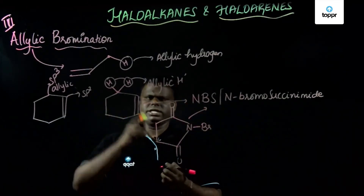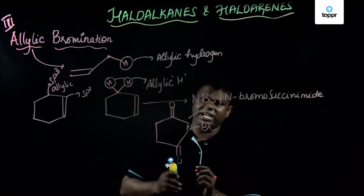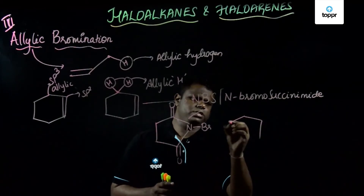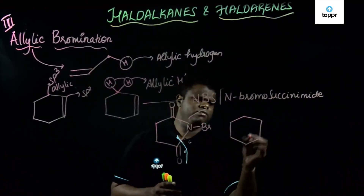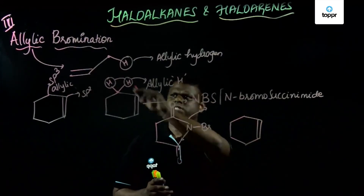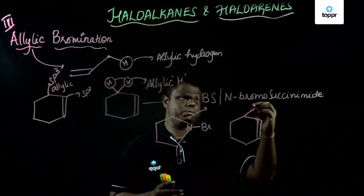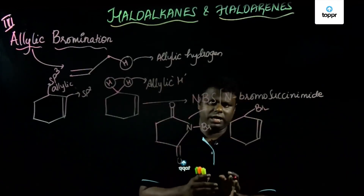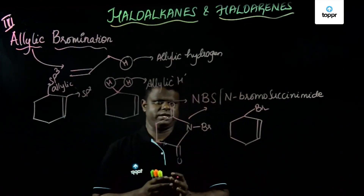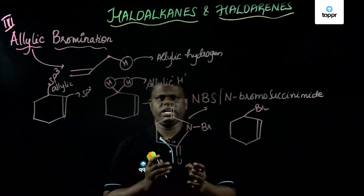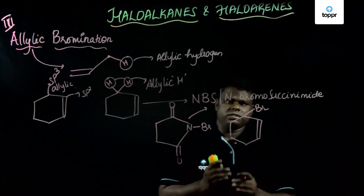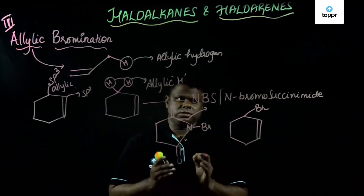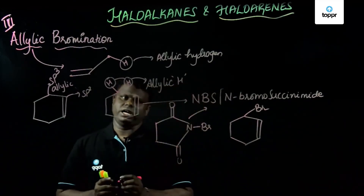What exactly happens? When you have an allylic hydrogen present, N-bromo succinamide removes that hydrogen and puts the Br on the allylic carbon. This is allylic bromination using N-bromo succinamide. Instead of N-bromo succinamide, you could even use N-chloro succinamide. The most important aspect of this reagent is that it undergoes only allylic bromination.